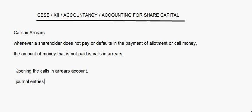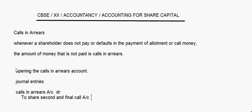What will be the journal entries for this? Whenever a shareholder doesn't pay the call money on his shares, the entry will be: calls in arrears account debit, to — let's say he hasn't paid the share second and final call. This entry records the non-receipt of second and final call money.